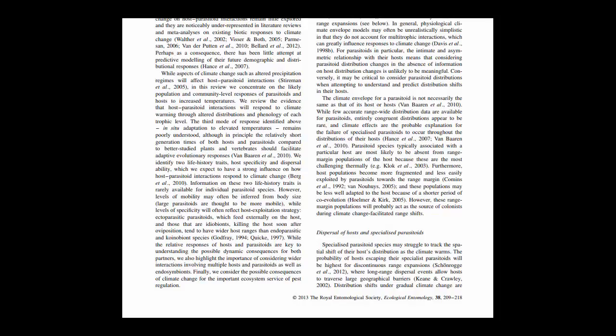One final place to look for citation information will be in the header or footer of an article on subsequent pages. In this example, the publication information is once again located in the footer, giving you both the title of the journal as well as the volume number.